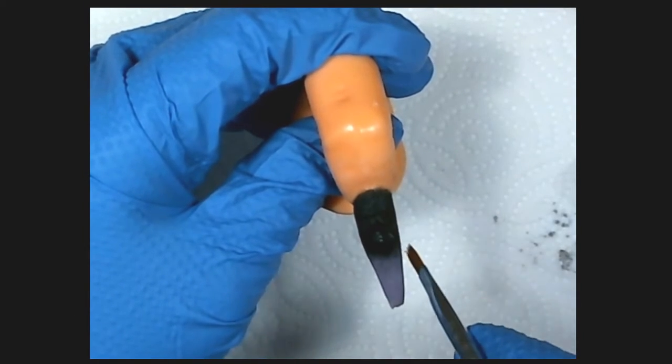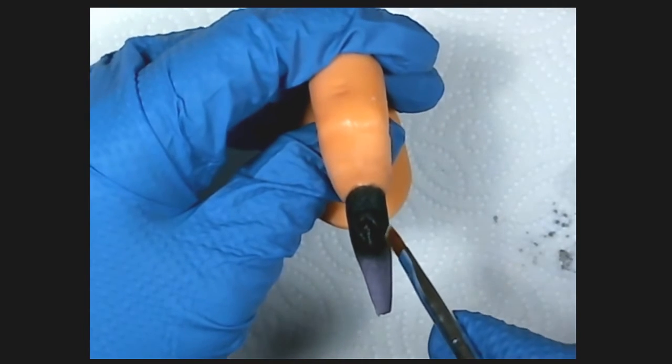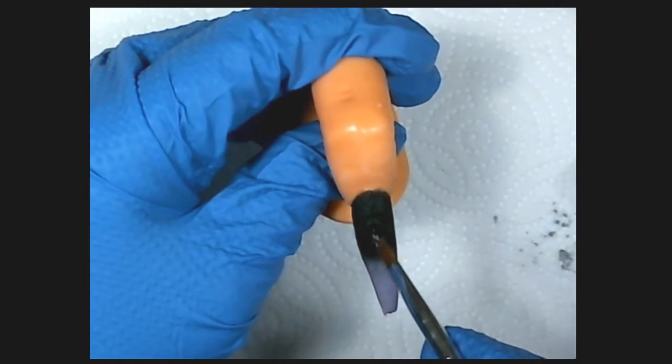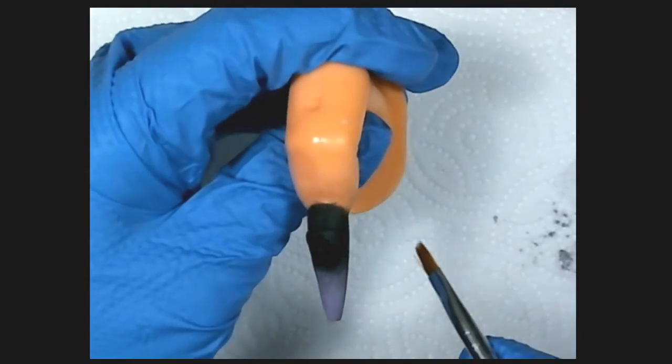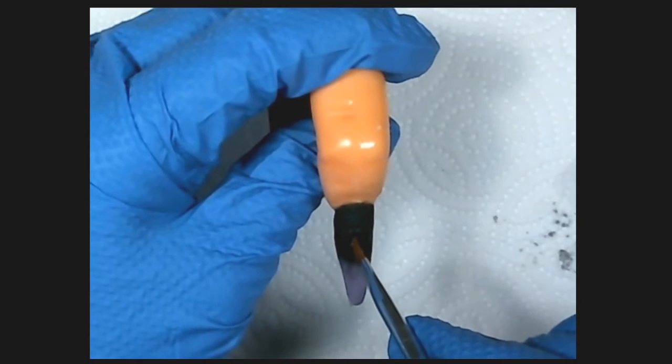So after I cure this builder gel, I'll have that sticky layer. And that's actually how you use the thermochrome powders anyway, is with the sticky layer. So it works out.